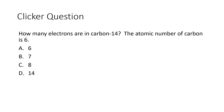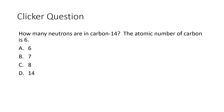This question is very similar to the previous one — it asks how many electrons are in carbon-14. The atomic number of carbon is 6, and for a neutral atom the number of protons equals the number of electrons, so this isotope has six electrons. To calculate the number of neutrons, we take the mass number (14) and subtract the atomic number (6), which gives us eight neutrons.